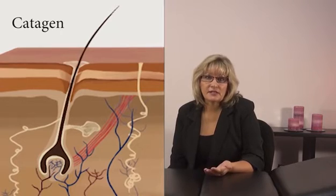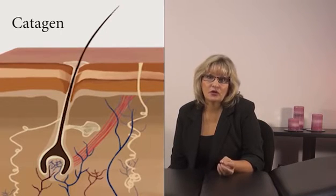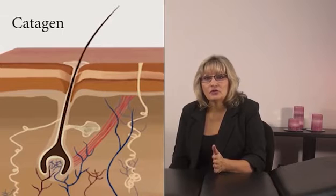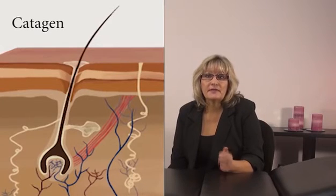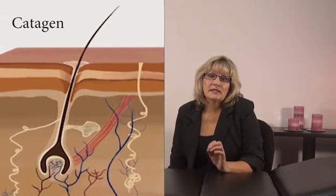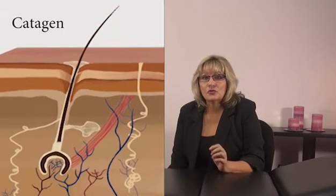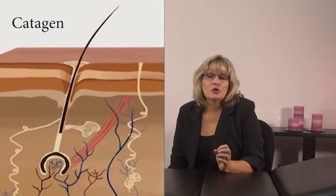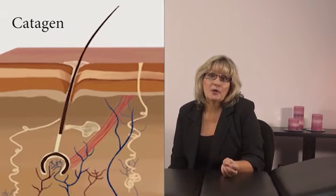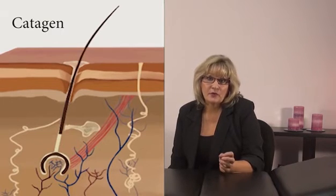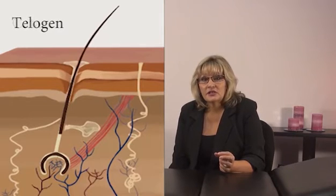Next we have the catagen stage. This is the transitional stage and lasts about two to three weeks. In this phase the growth totally stops but the hair does not yet fall out. During this phase the hair follicle shrinks, the lower part is destroyed, the dermal papilla breaks away, and the bulb detaches from the blood supply.